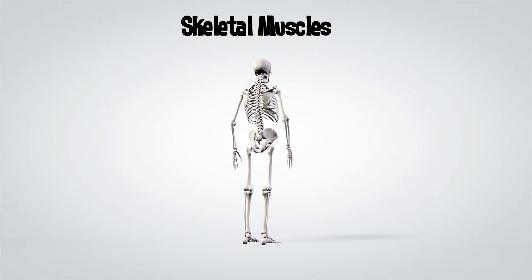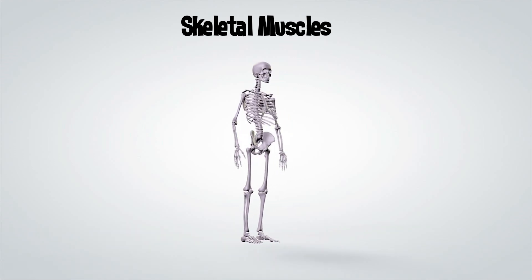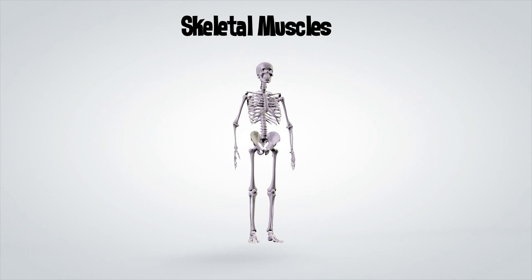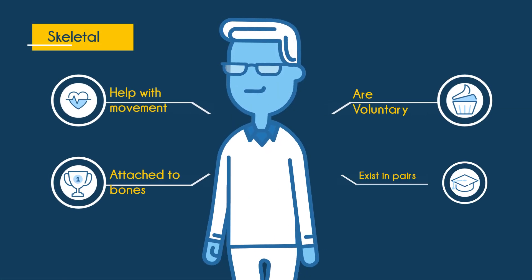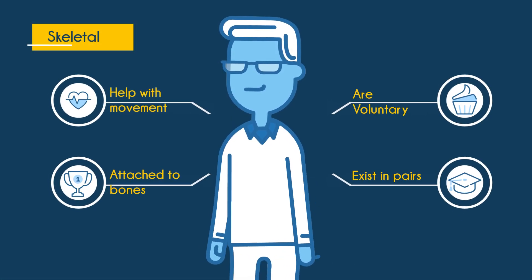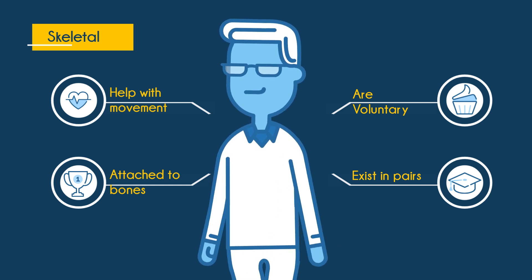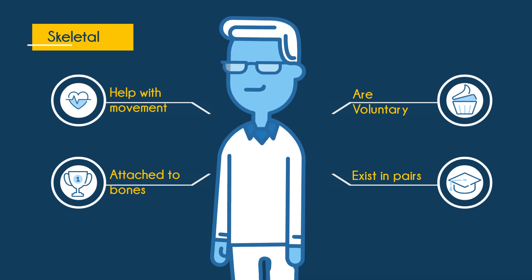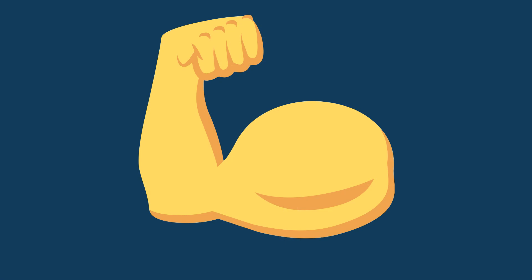Skeletal muscles are voluntary muscles, which means that we can actively control their functions. They are attached to our bones and allow us to move. Skeletal muscles often exist in pairs, so when one muscle contracts, the other relaxes.